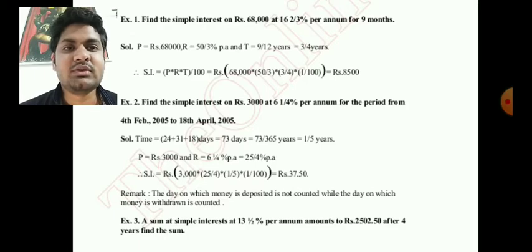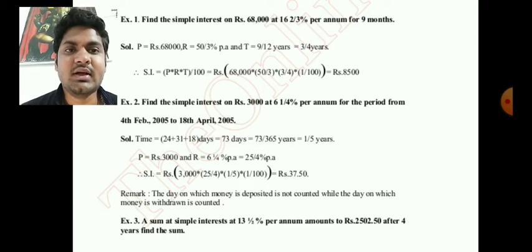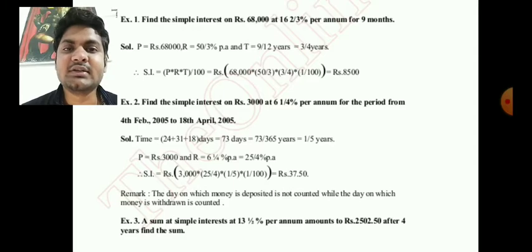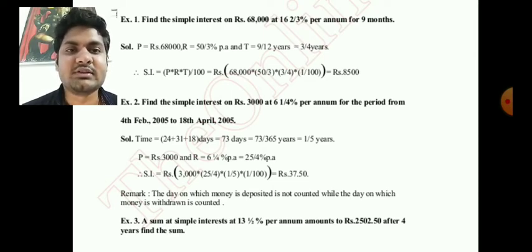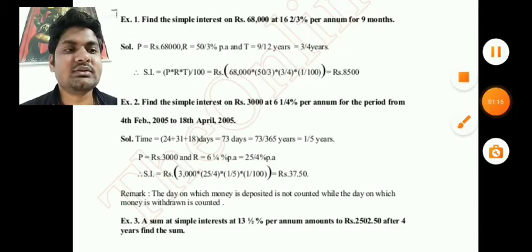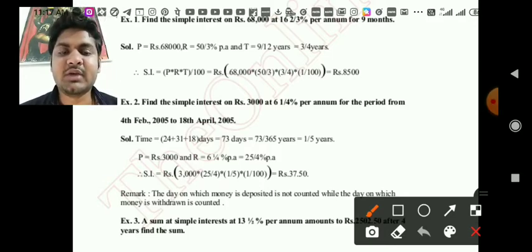See the first example: Find the simple interest on ₹68,000 at 16⅔% per annum for 9 months. The principal is given. The rate is given as a mixed fraction — 16⅔% — and the time is given in months, not in years. So we will need to convert both rate and time into simple terms before solving.